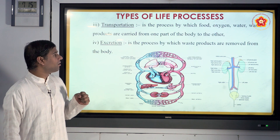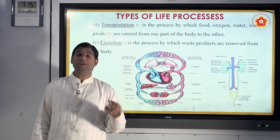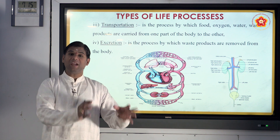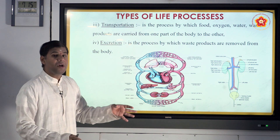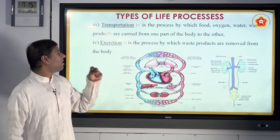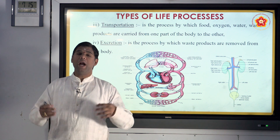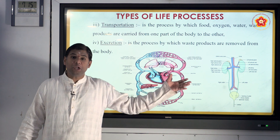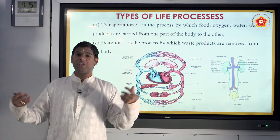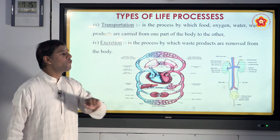Coming to transportation — just as buses and cars transport us from one place to another, transportation in living beings carries food, oxygen, water, and waste products from one part of the body to another. Next is excretion — anything taken in has to go out. Excretion is the process by which waste products are removed out from the body totally.